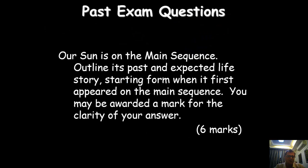Past exam questions. It says, our sun is on the main sequence. Outline its past and expected life story starting from when it first appeared on the main sequence. You may be awarded a mark for clarity of your answer. So it's basically, can you clearly tell the story of a star, providing as much detail as possible? Take a moment, try and jot down what you can remember, what we've spoken about.